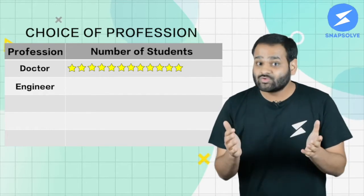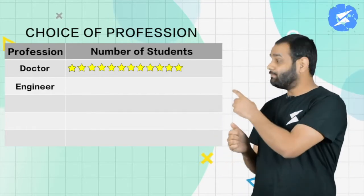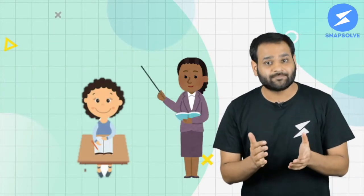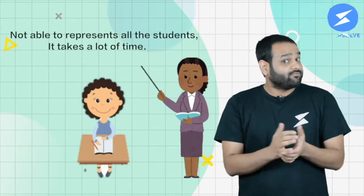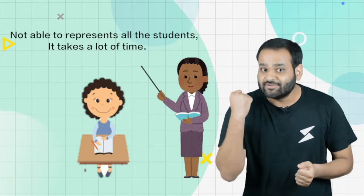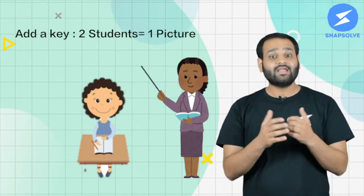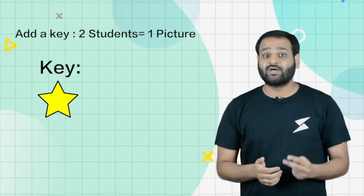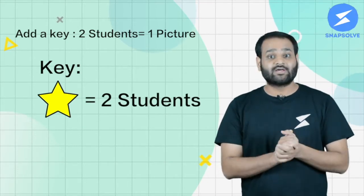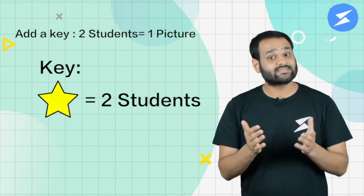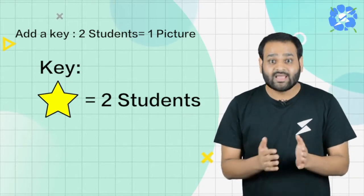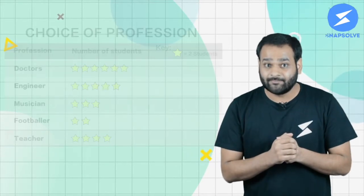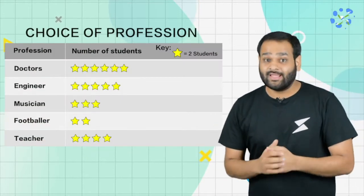The next profession was engineering, with 10 students wanting to be engineers. Reema started pasting pictures, but after pasting five pictures she went to the teacher and said that this is so much data and it's taking a lot of time. Mrs. Matthew gave her a solution — she told Reema to use one star picture to represent two students, and to add a note at the end called the key. In this way, with 40 students in the class, Reema only needs to show 20 pictures.